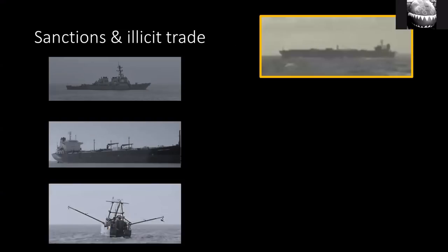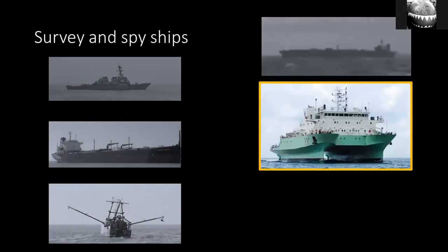Another use case is what we call dark ships: sanction-busting, illegal movements, arms supply — ships that turn off their AIS. That itself is interesting, and there are all sorts of efforts in that space. Personally, I'm more interested in survey ships and spy ships. Survey ships are often dual-use — or rather, the data they're gathering is relevant to submarine warfare and seabed warfare.